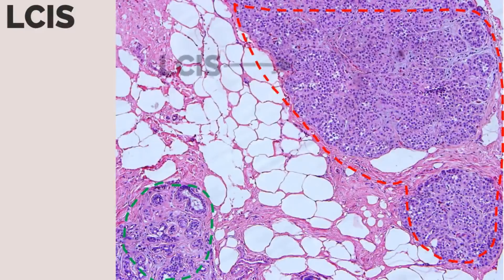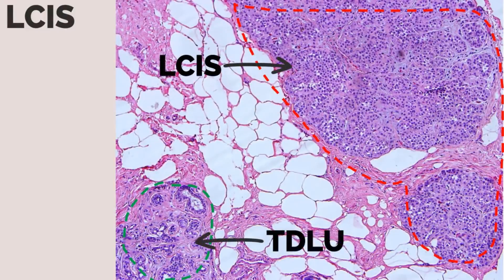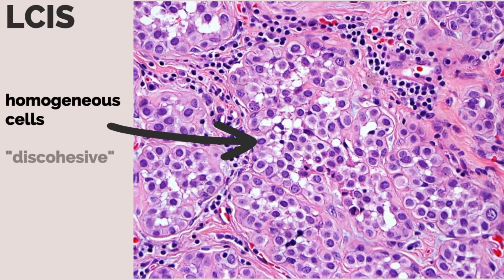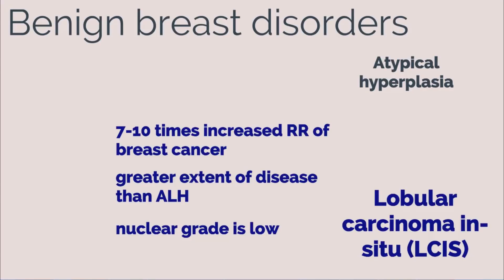In this histopathology image, you can see LCIS compared to a benign TDLU. Zooming in, you can see intraductal proliferation of cells that are fairly homogeneous and loosely arranged or discohesive. LCIS is poorly understood and it is not clear how it directly leads to breast cancer. Like ALH, treatment is typically close observation rather than surgery.